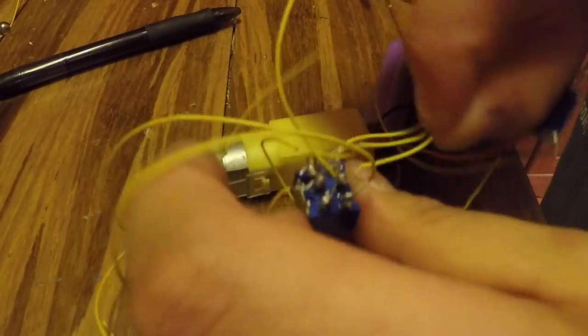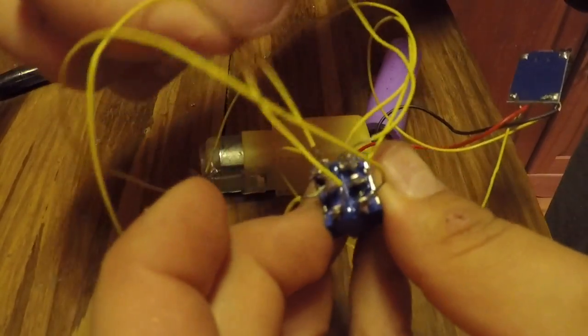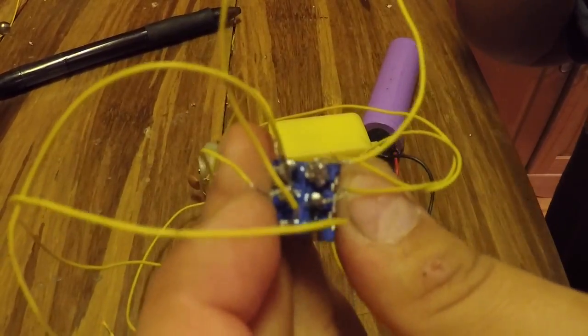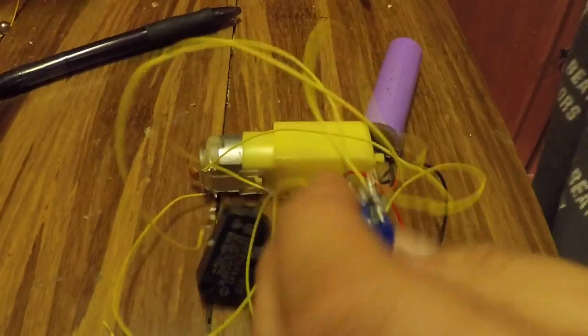And also if you want to you could have put some heat shrink tubing all around these wire connections and everything. So it won't short out and will be nicer. So you can do that.